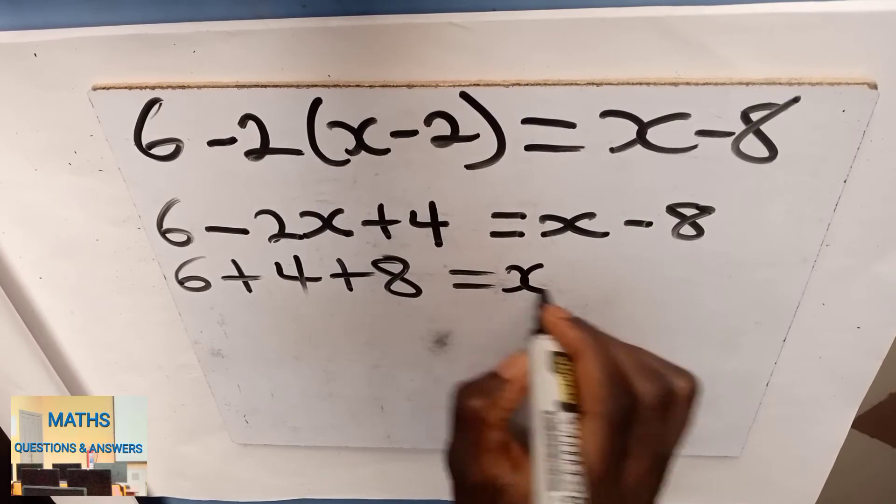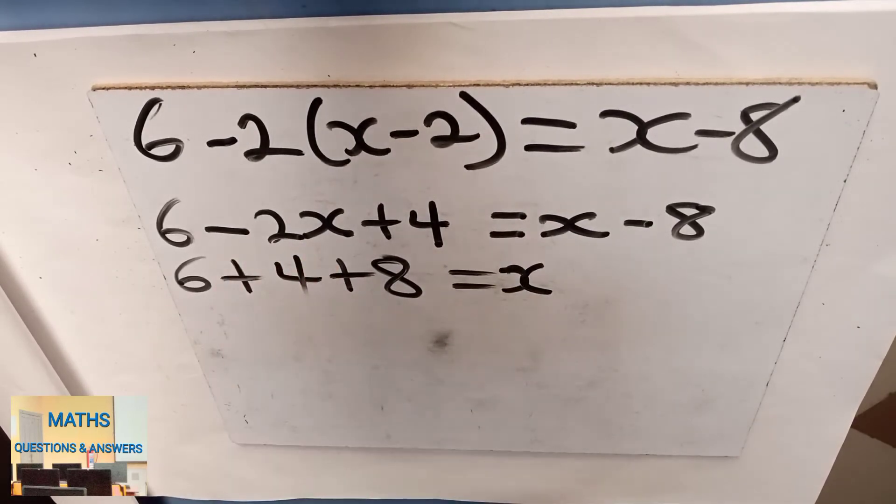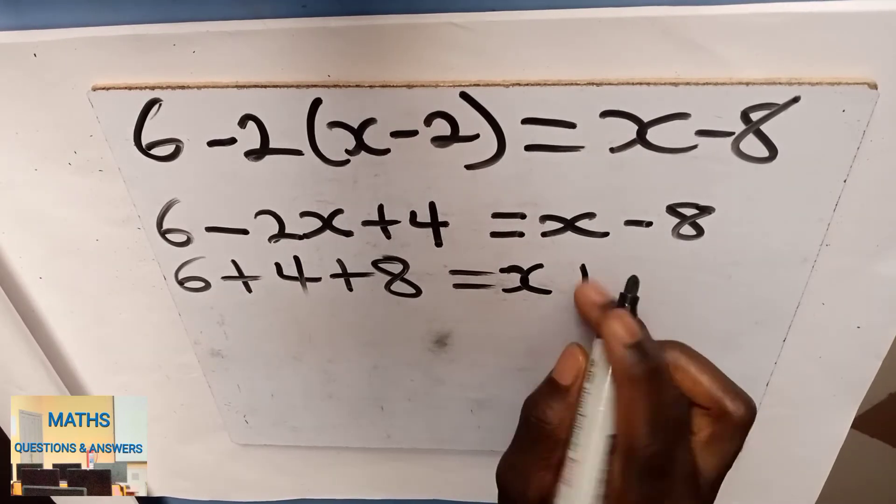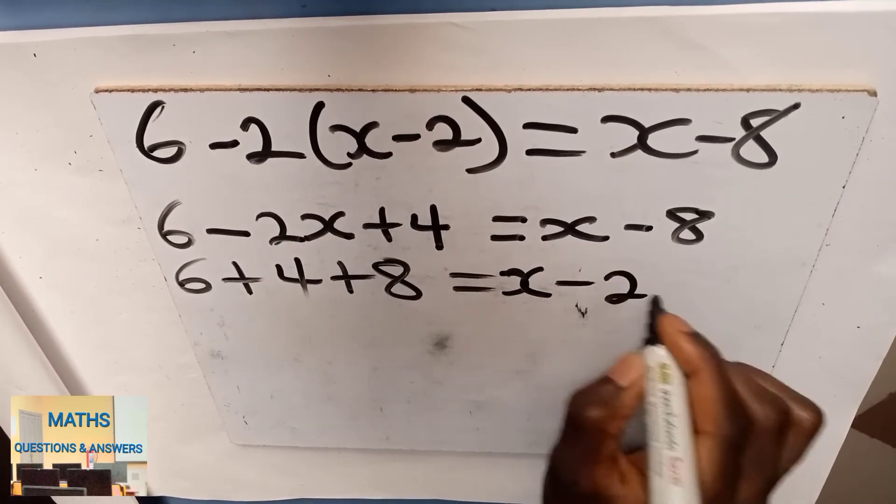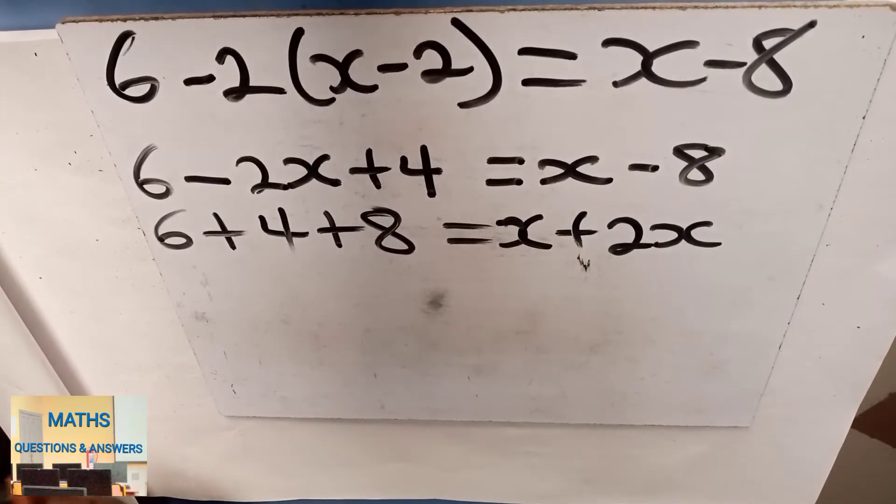I have my x here already. I'm sending the negative 2x to the right. So since it's negative, it will be positive 2x.